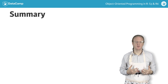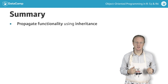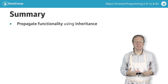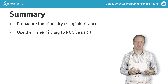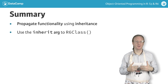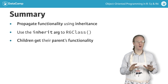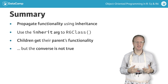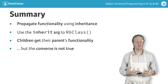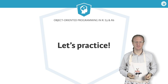To summarize, you can propagate functionality from one class to another using inheritance. This is achieved by using the inherit argument of R6Class. The child class gets all the data fields and functions from the parent class, but the converse is not true — the parent class does not inherit the traits of its child. Now let's try some examples.